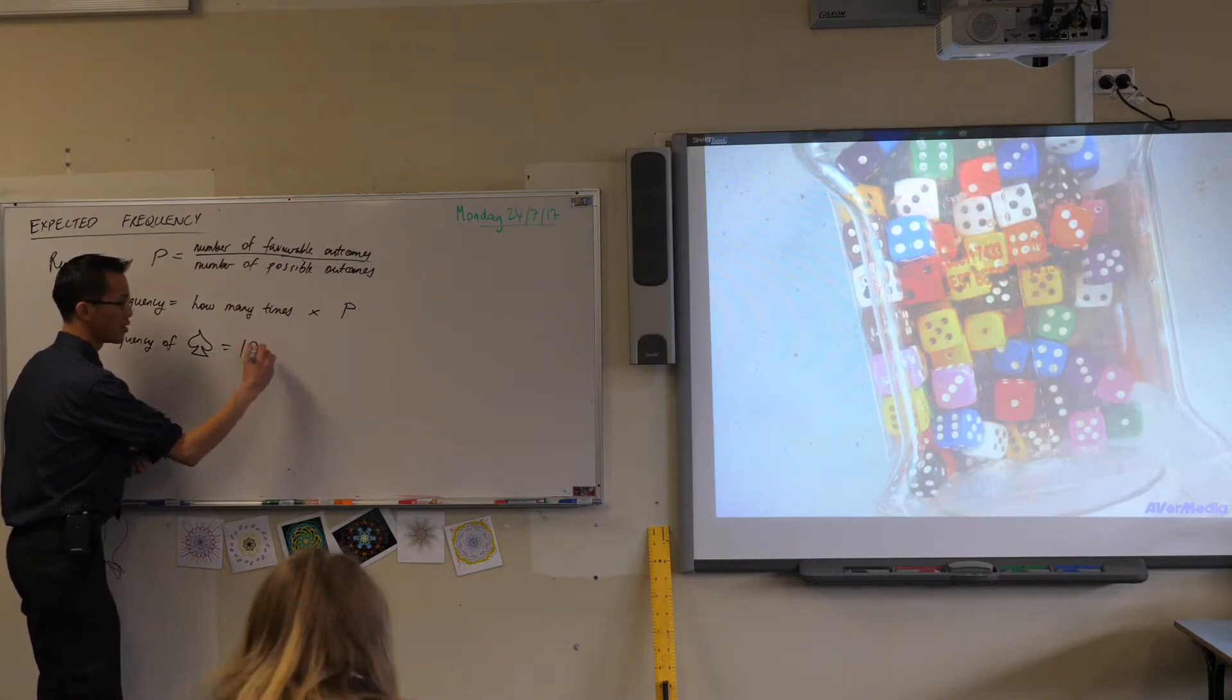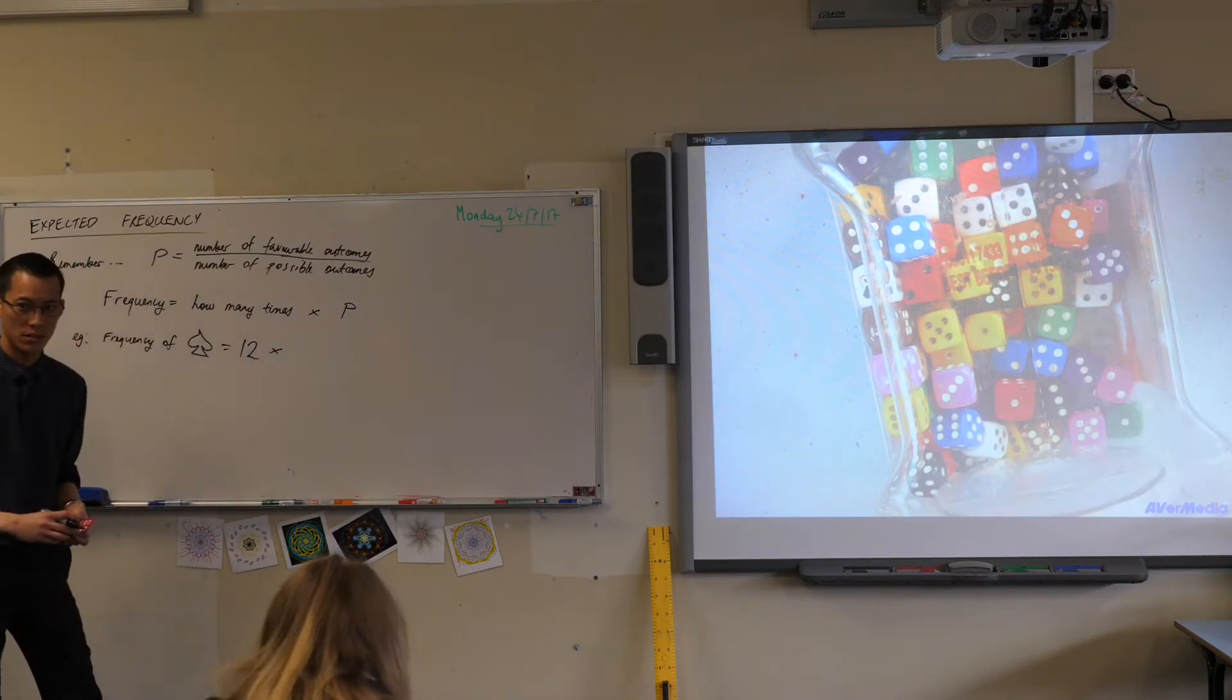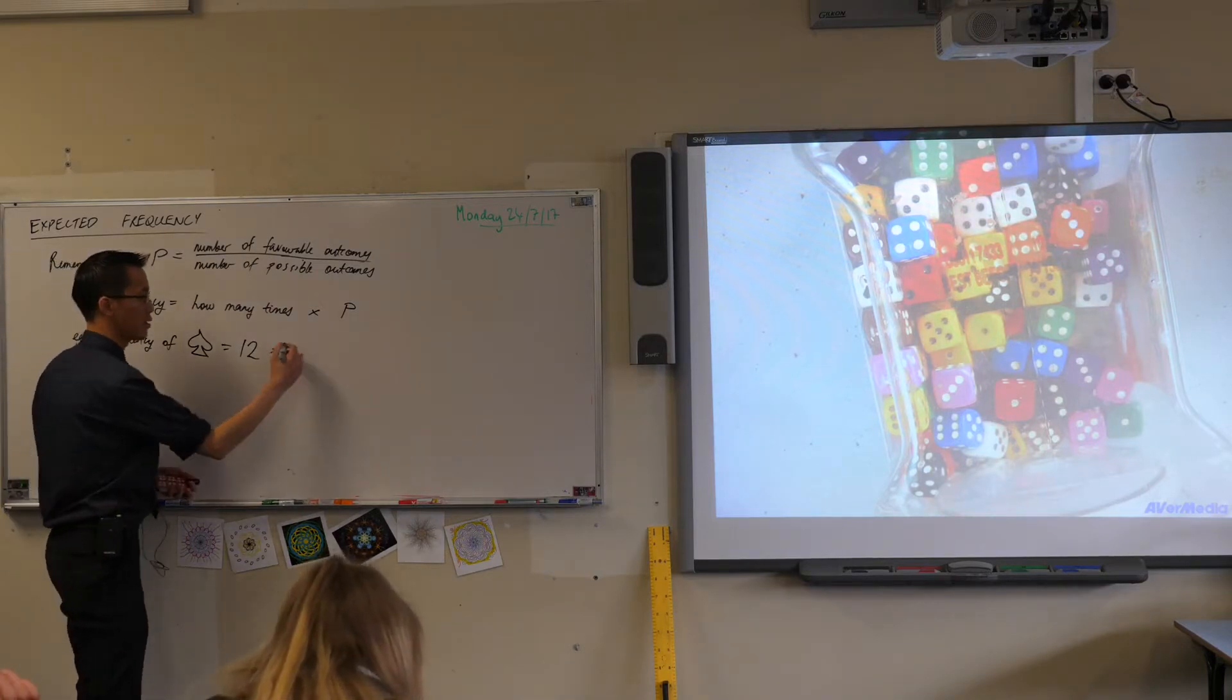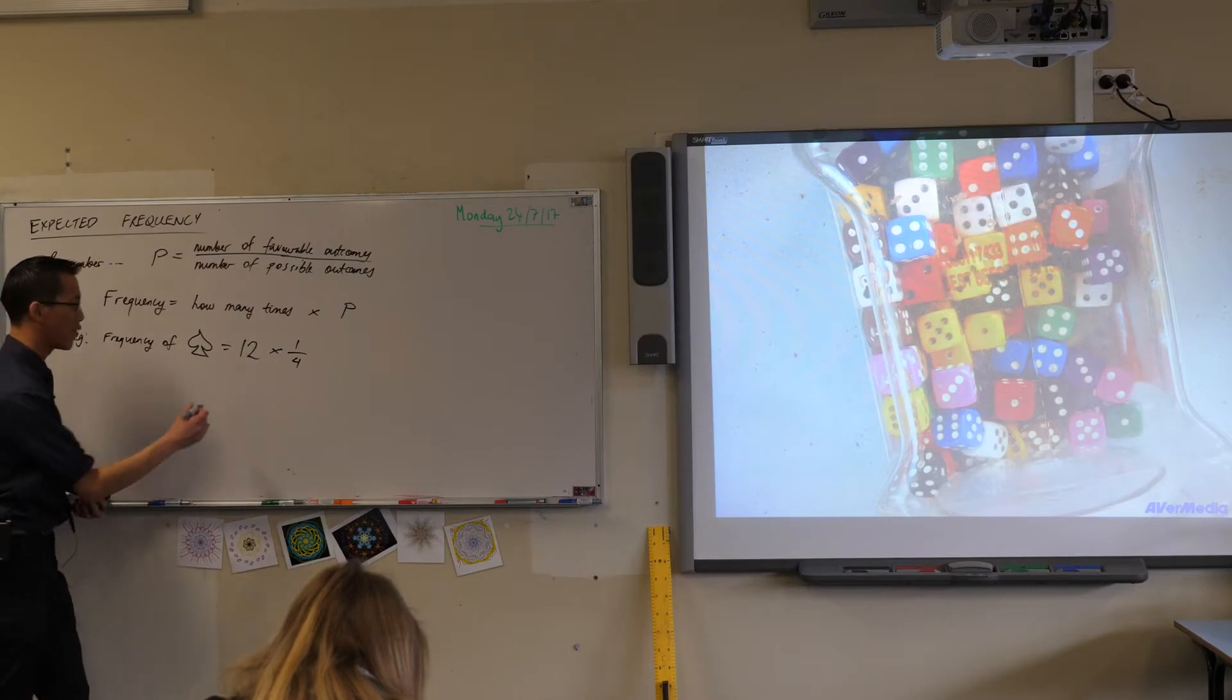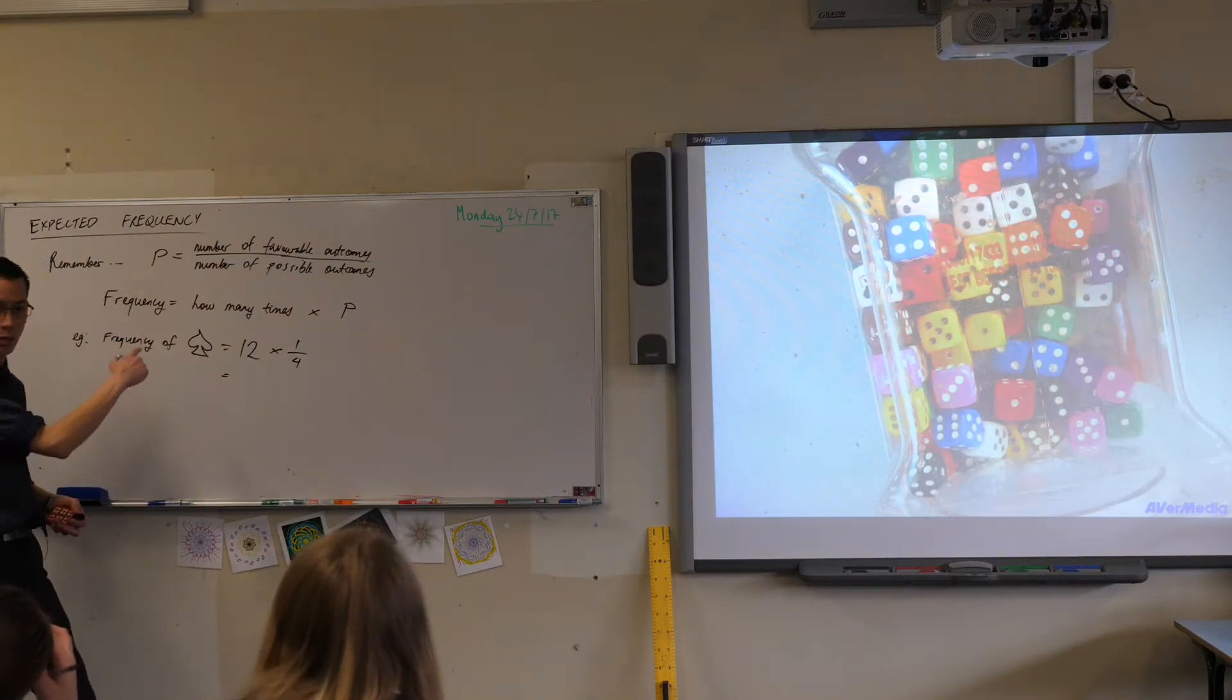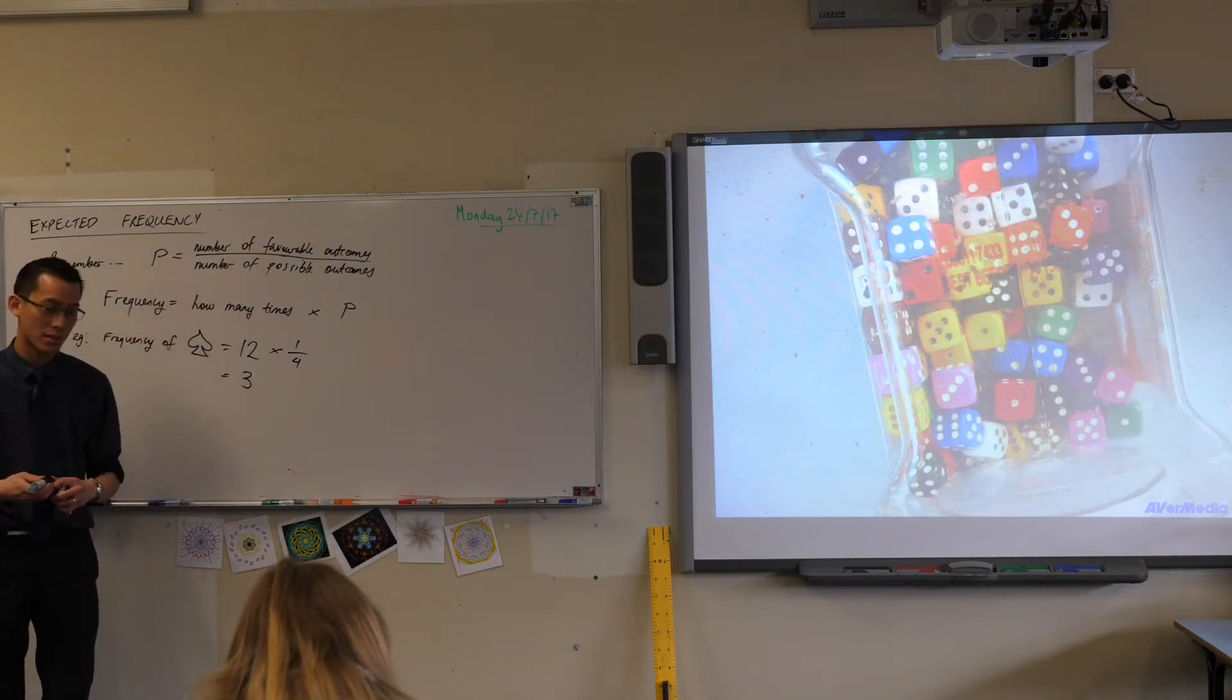If I went 12 times, I would multiply by the probability, which is - how many suits are there in a deck of cards again? There are four, and it's all equal chance, so I'd say 12 times a quarter. So I would expect if I dealt out 12 cards that I would get, how many? 12 times a quarter, which is 3. So I would expect that I would get three spades.